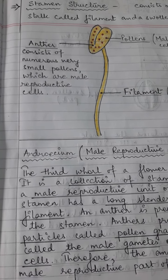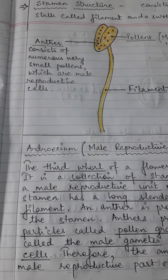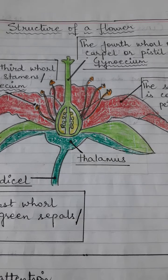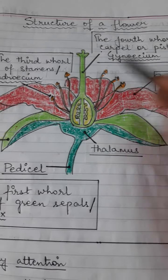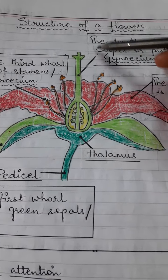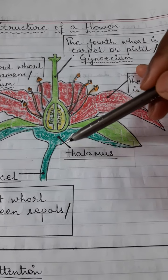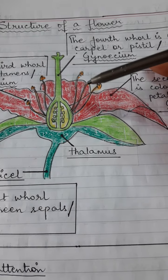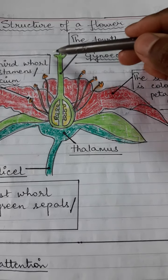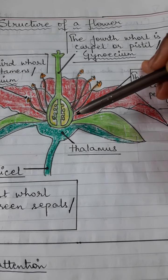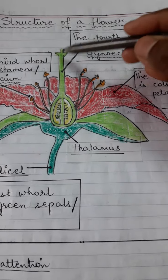Today we will be discussing about pistil structure. Now where do we find pistil? We find pistil in this part of the flower. Can you see the structure of a flower? This is the fourth whorl, which is known as pistil, and this is also known as the female reproductive unit, which is also known as Gynoecium.